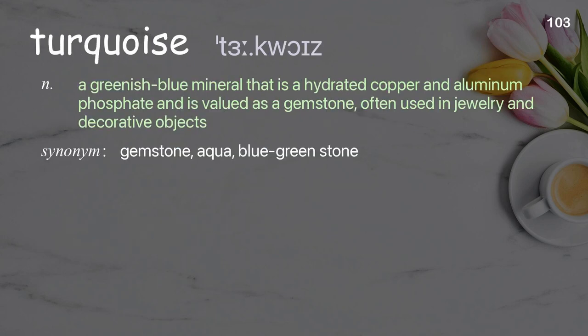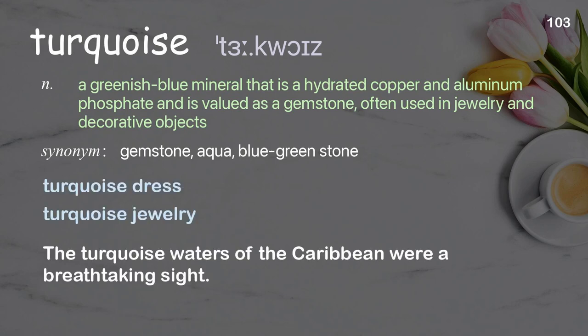Turquoise. A greenish-blue mineral that is a hydrated copper and aluminum phosphate and is valued as a gemstone, often used in jewelry and decorative objects. Examples: turquoise dress, turquoise jewelry. The turquoise waters of the Caribbean were a breathtaking sight.